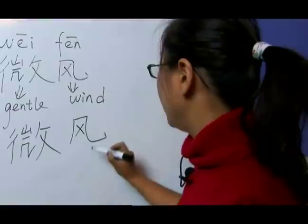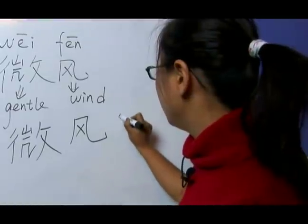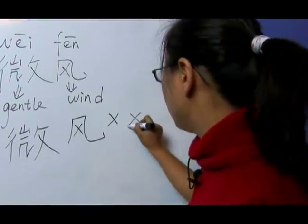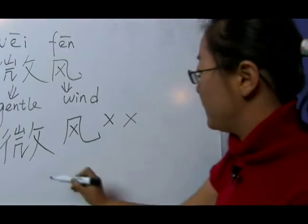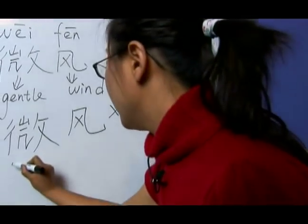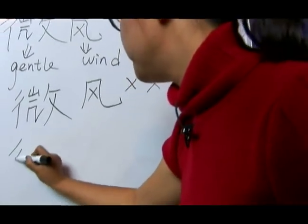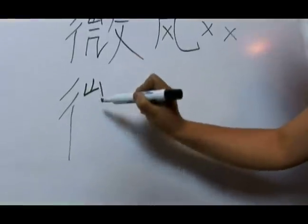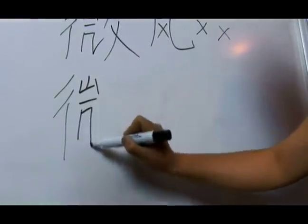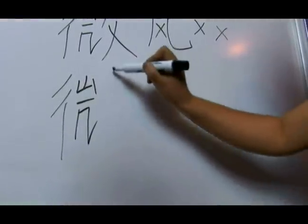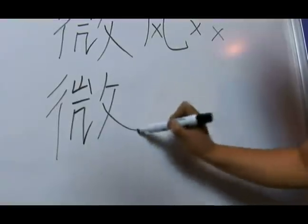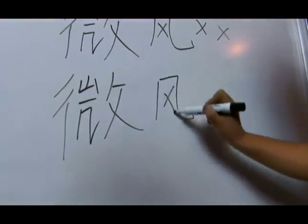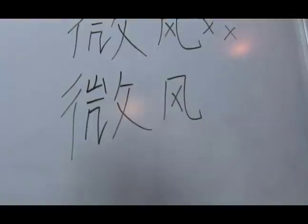Left before right — this is the right order. Don't write it like this. 威风 again.